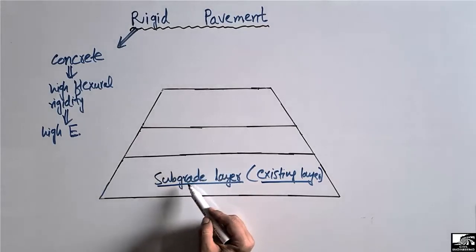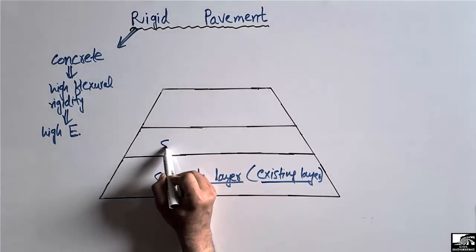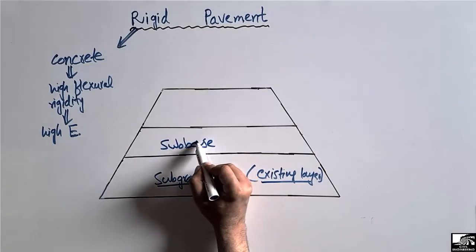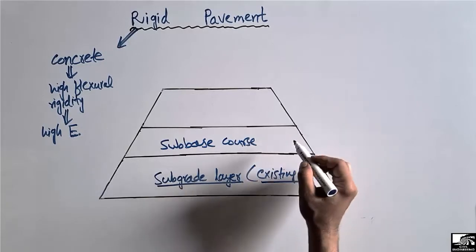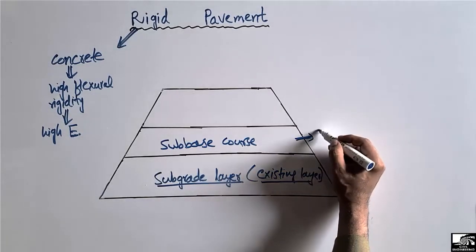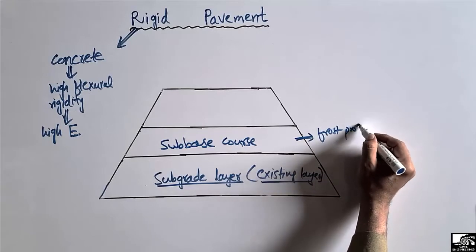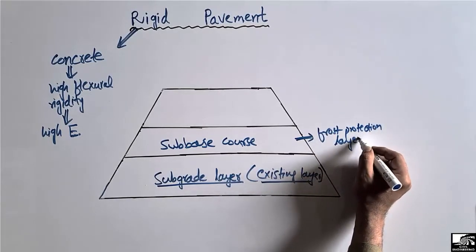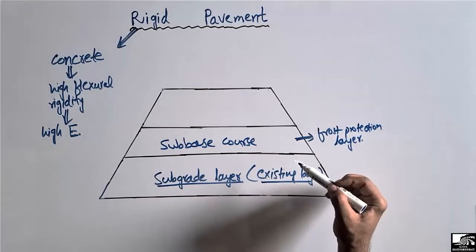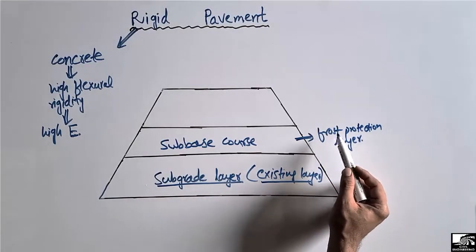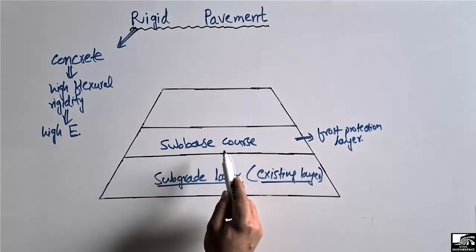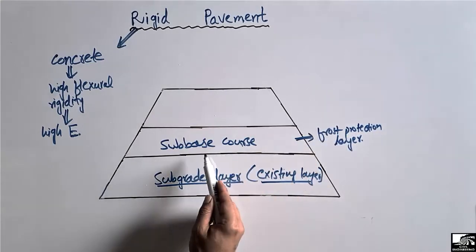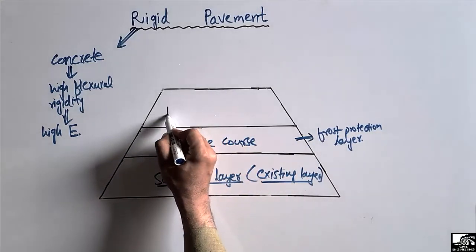On top of the subgrade layer, we place the sub-base course. This layer is also known as the frost protection layer, because it is used to resist the formation of frost during cold weather conditions. There is formation of frost in the soil, and this layer helps to resist that. On top of the sub-base course, we have the base course.